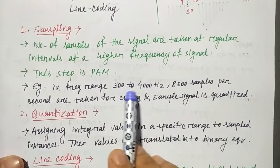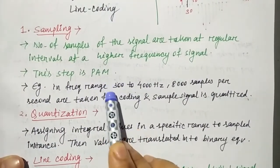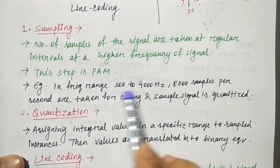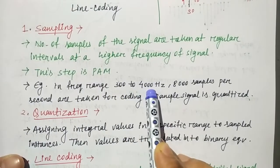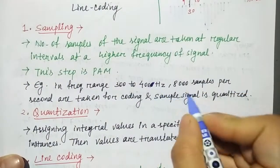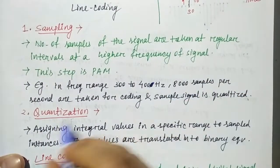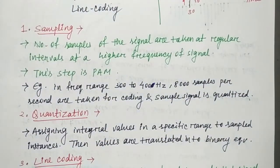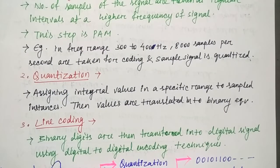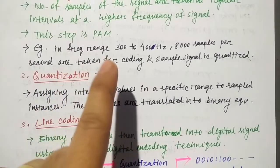Here is an example. If you have a frequency range of 300 to 400, then 8000 samples are collected. Sampling is the same as in Pulse Amplitude Modulation — the same thing happens in this step.